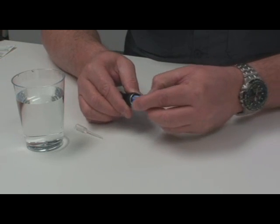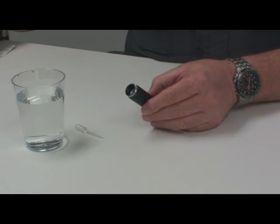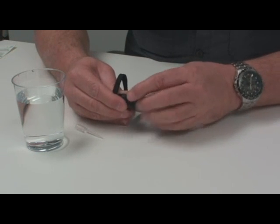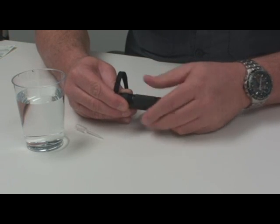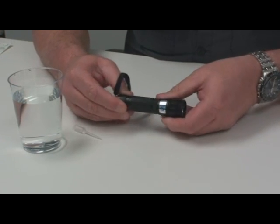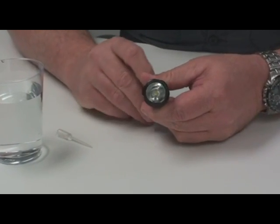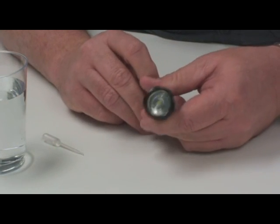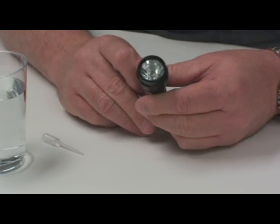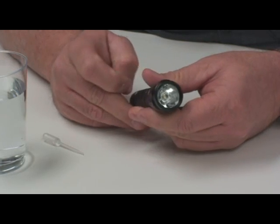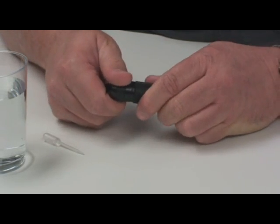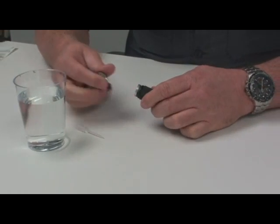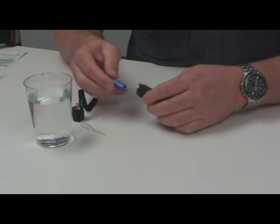We're going to put the battery into the flashlight, close it up. You're going to notice that there is no light whatsoever. The battery is completely in its discharged state. It comes to you from the factory just like this.